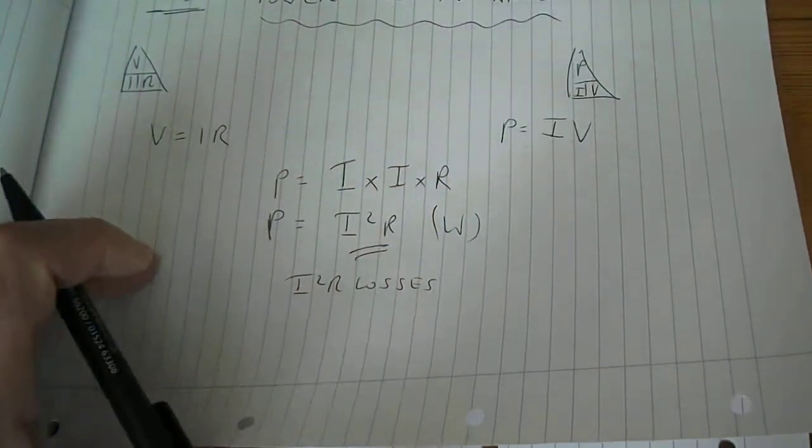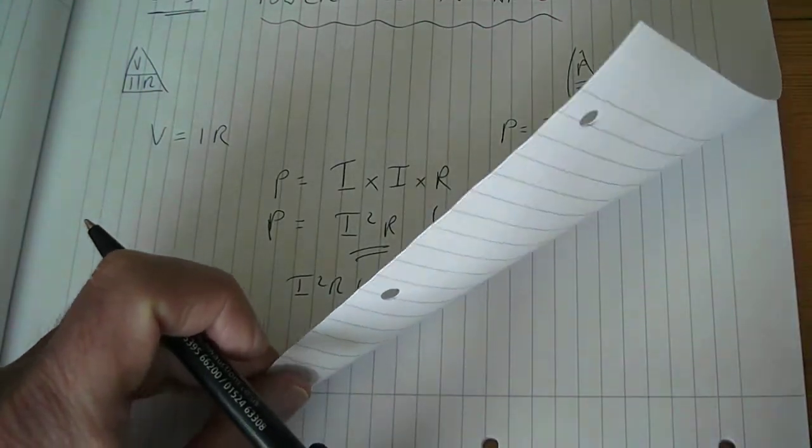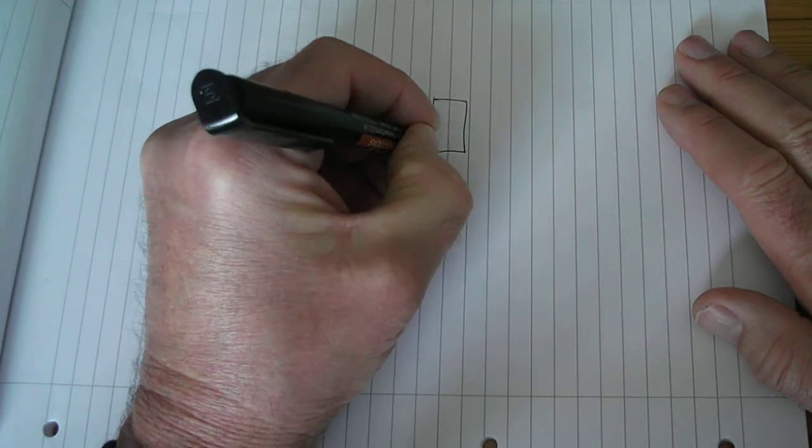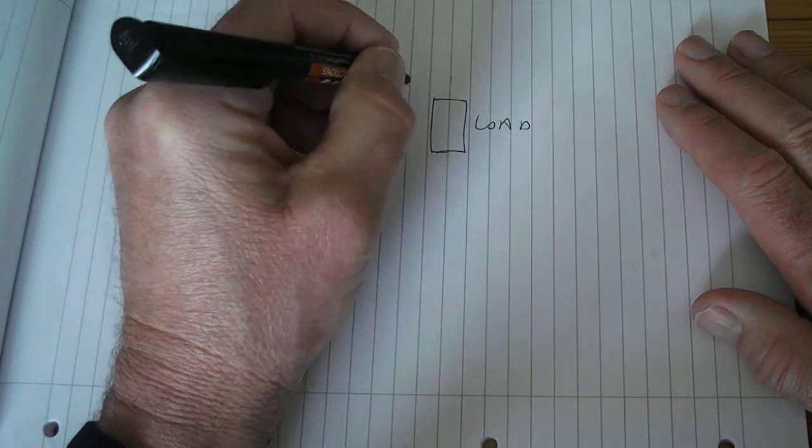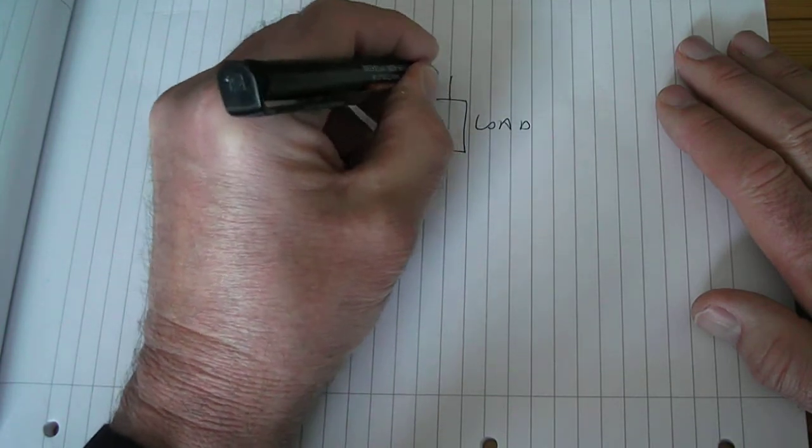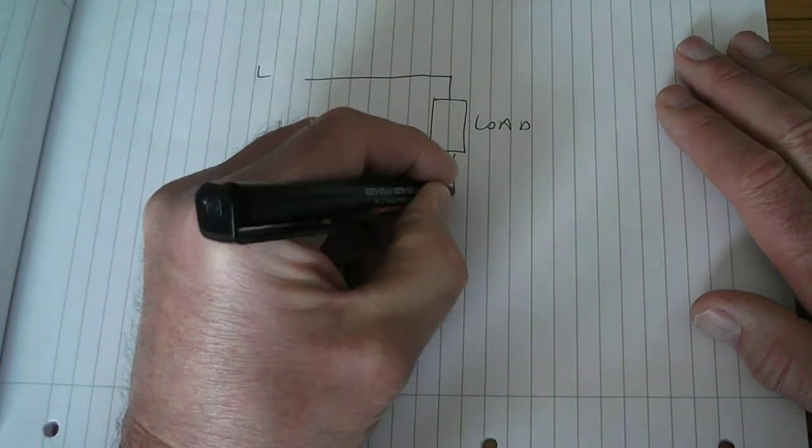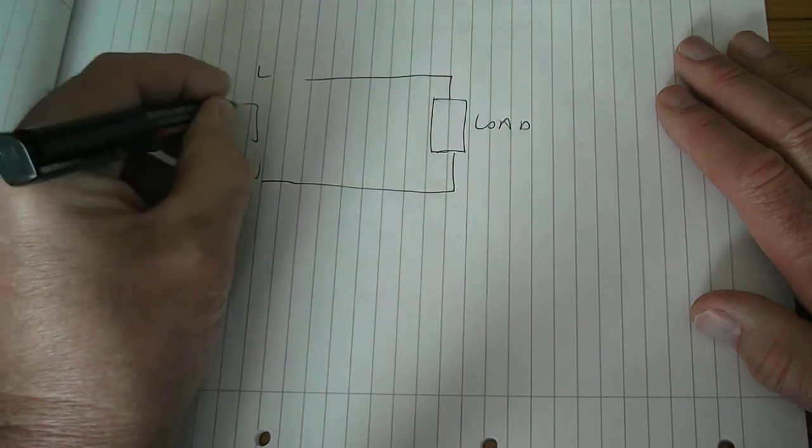Right, so where's that useful in cable situations? Well, if we have a load here and that's supplied by a piece of cable, live and a neutral. Now this could be our substation here.